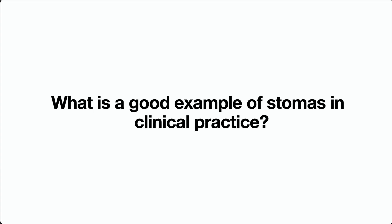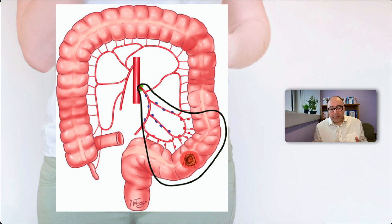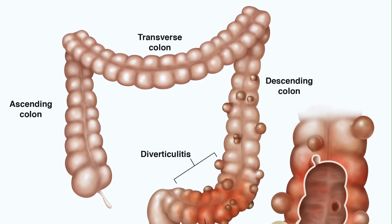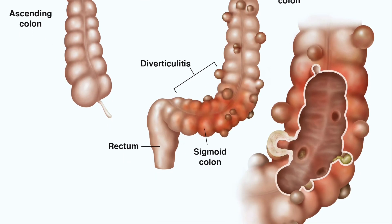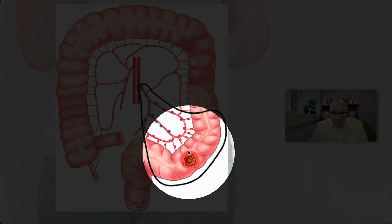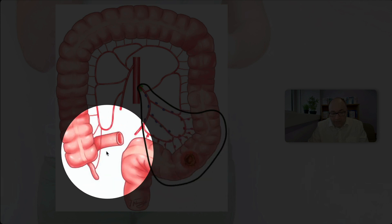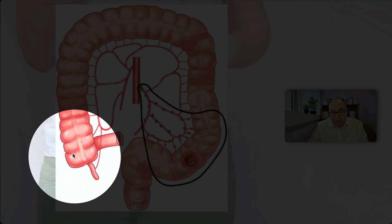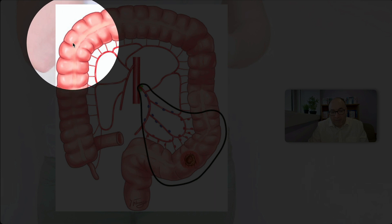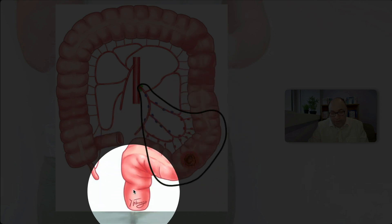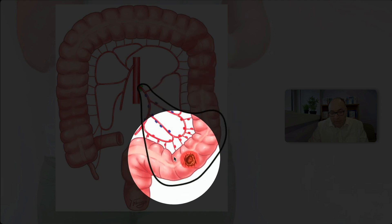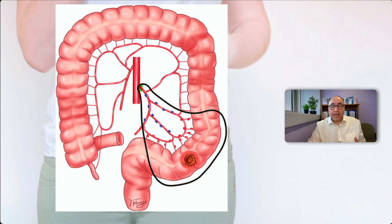Next up: what's a good example of stomas in clinical practice? A very good illustration is the procedure called Hartman's — usually the removal of the sigmoid colon, either due to a tumor or a perforated diverticulum from diverticulitis, which is a very common presentation in surgical practice. To recap the anatomy: appendix, terminal ileum, cecum, ascending colon, hepatic flexure, transverse colon, splenic flexure, descending colon, then the sigmoid colon — which in this case is involved — and then the rectum. The sigmoid colon is removed together with its blood supply and lymphatic drainage, but you don't want to anastomose the stumps together because of contamination.